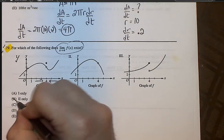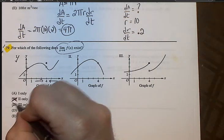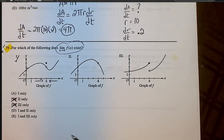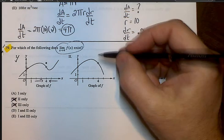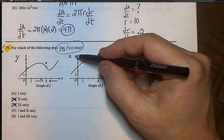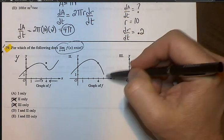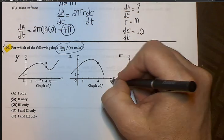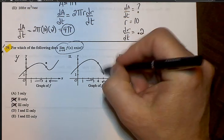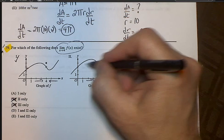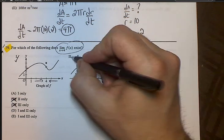B can't be an answer anymore. C can't be an answer anymore. So it's either going to be A, D, or E. At least we're eliminating choices. In question number, or in double I, same thing. As we approach 4 this way and as we approach 4 this way, we're going to be approaching that same number in the y axis. So this is also good.